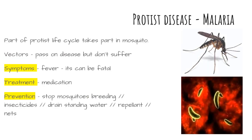Malaria is caused by a protist. Part of the malarial protist's life cycle takes place inside the mosquito. The mosquitoes are vectors.